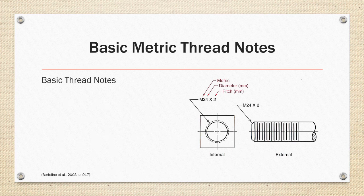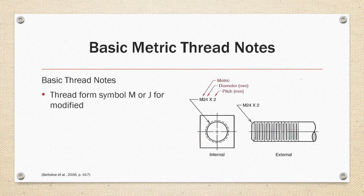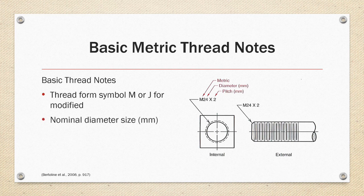Basic metric thread notes. The basic thread notes for metric specification include the threaded form symbol M or JM for metric or modified metric, followed by the nominal diameter size in millimeters and the thread pitch separated by an X. In the example on the right we have a metric thread that is 24 millimeters in nominal diameter size with a thread pitch of two threads per millimeter.